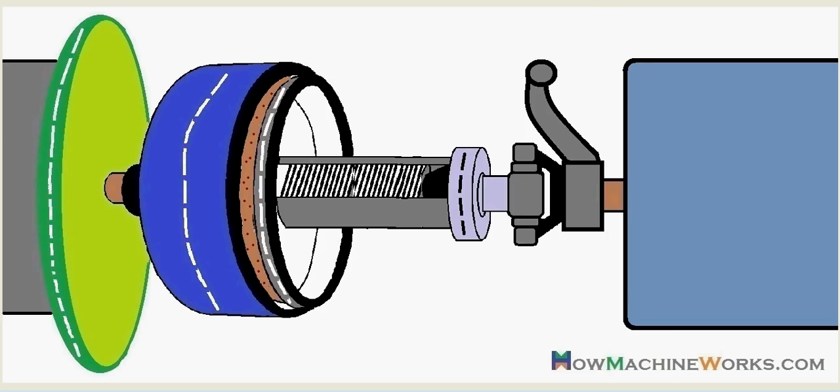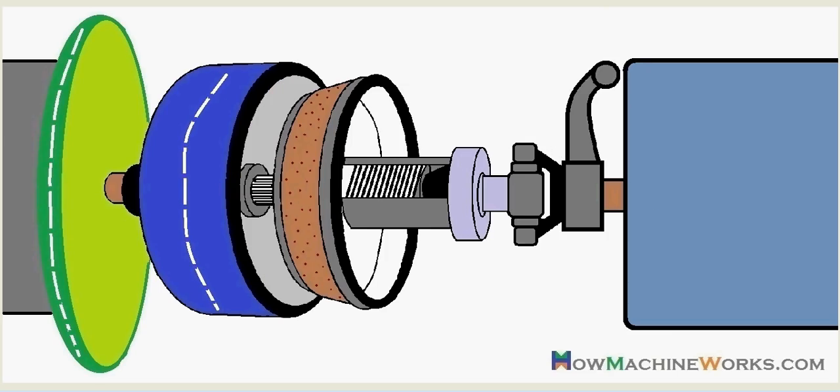So that's how simply a cone type clutch actually works, and this is mainly used in racing cars also. So I believe you understand its working.